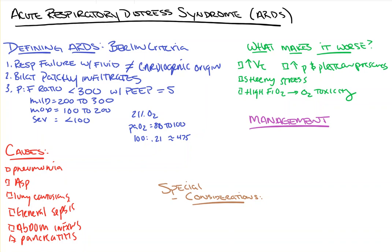Next, we need to treat the underlying cause — meaning if there's an infection, we decrease fluid status and treat that cause. After this, it's really going to be general support: nutrition, and supporting other organs that may be affected, such as hemodialysis in kidney failure patients.